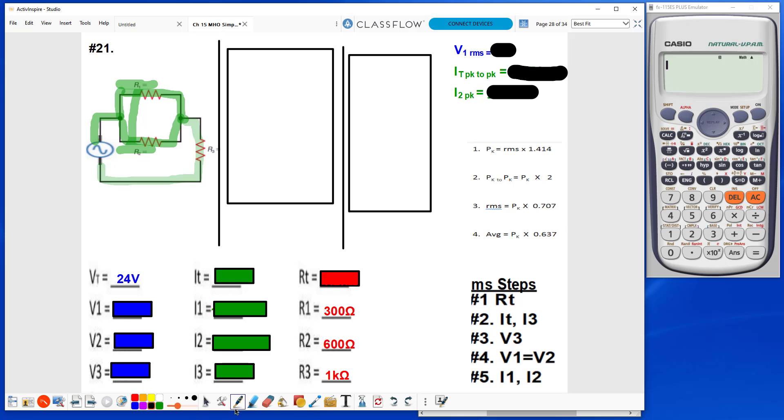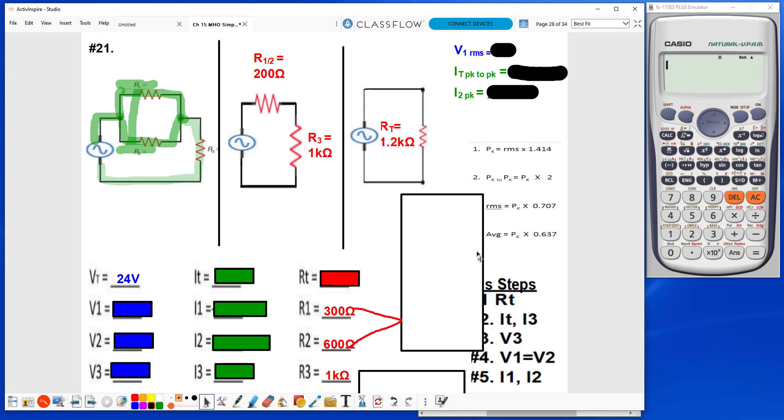So I will take R1 and R2 and run them through the reciprocal formula, giving me a value of 200 ohms. I'm going to bring the value of R3 just straight over, so that gives me 200 ohms in series with 1k ohm. Now I can add these two together to get my Rt of 1.2k ohms.